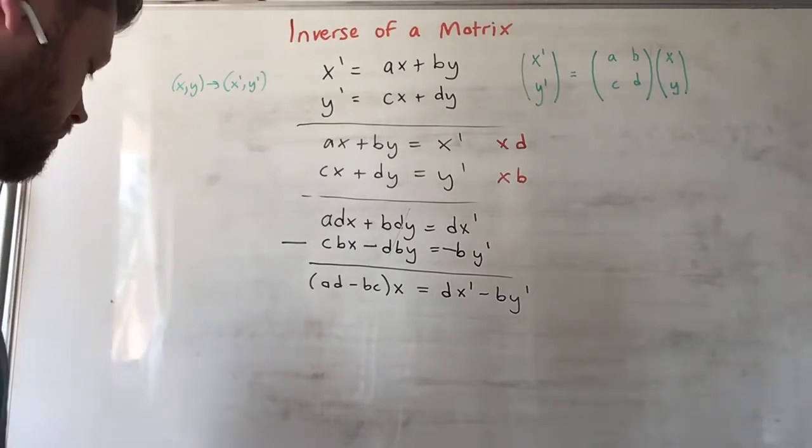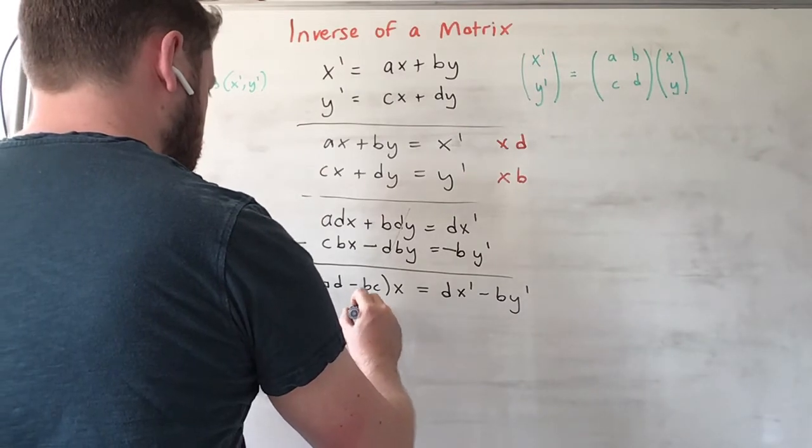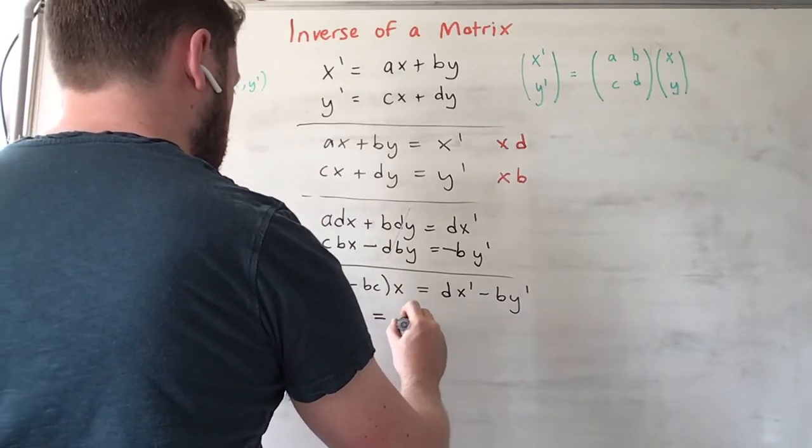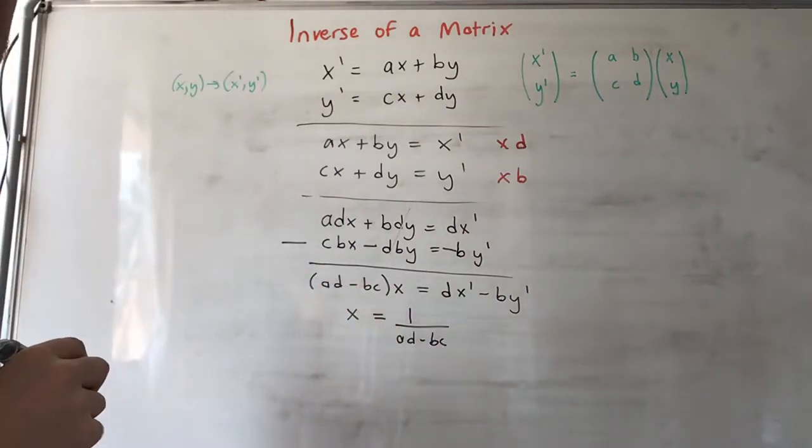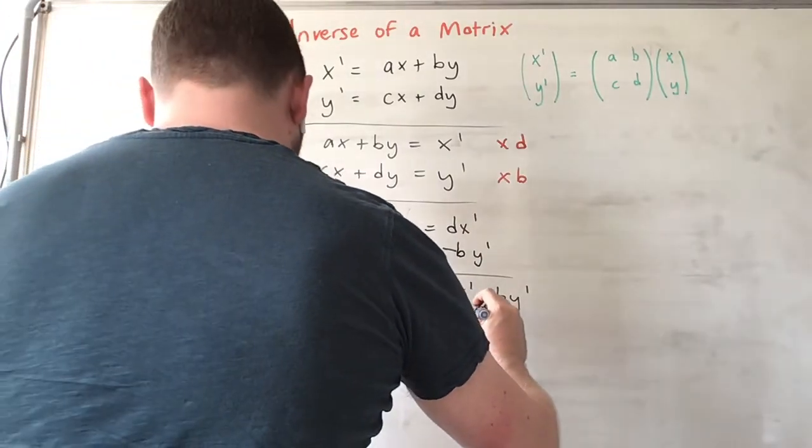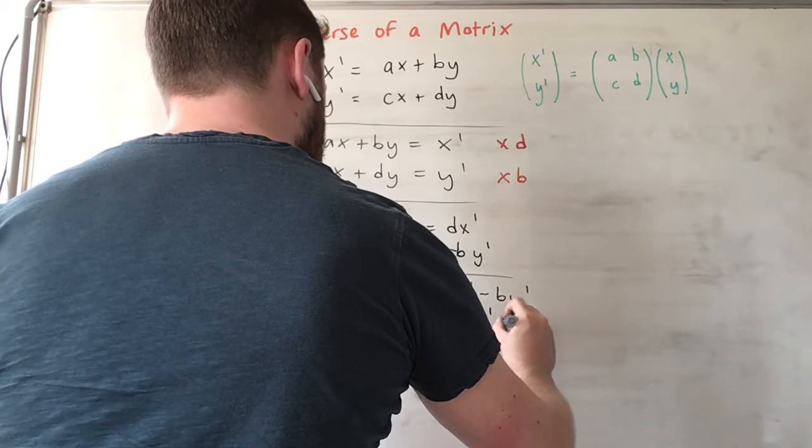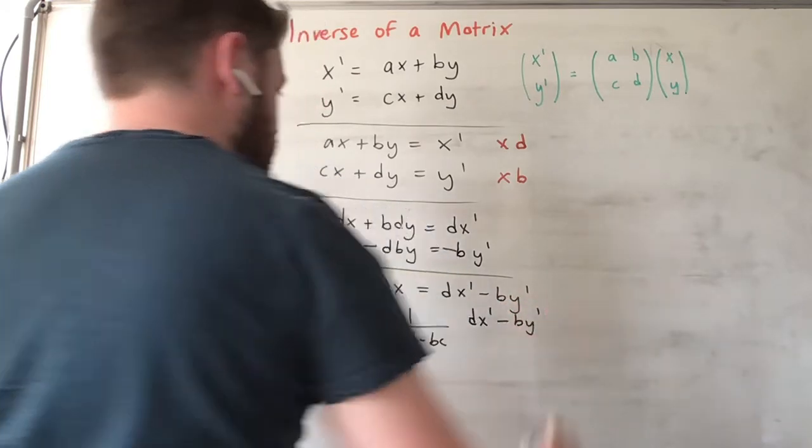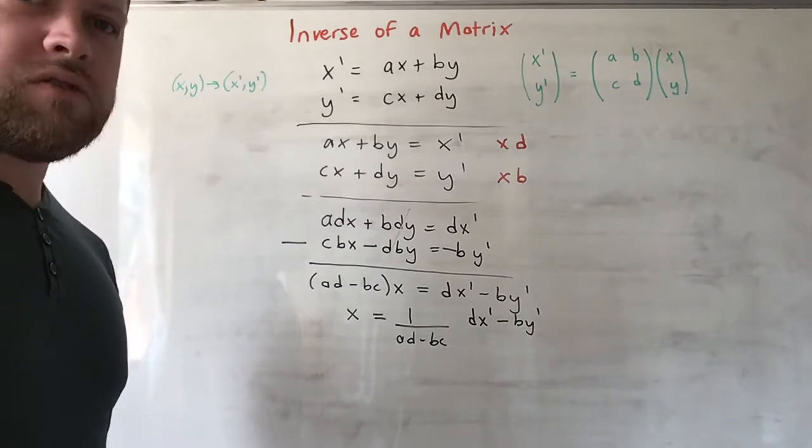We nearly have x in terms of x' and y'. So I'm going to write this as x = 1 over (ad - bc), that's dividing both sides by (ad - bc), times dx' - by'.